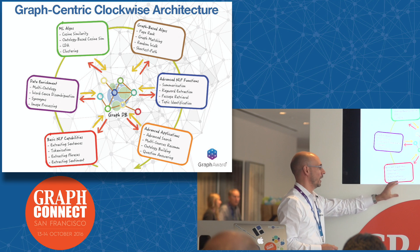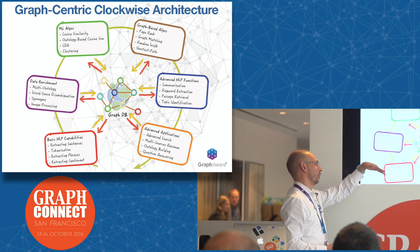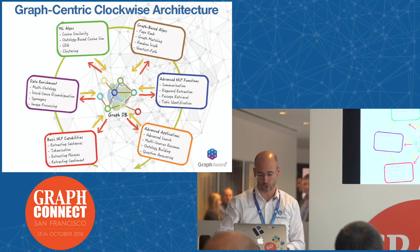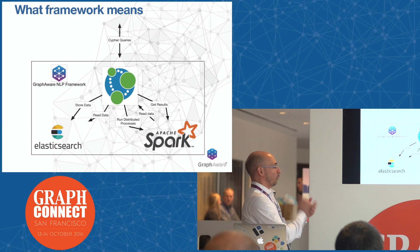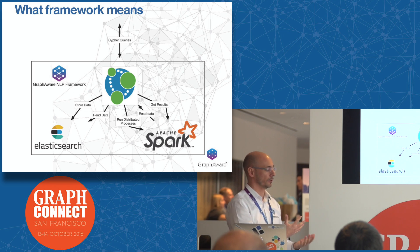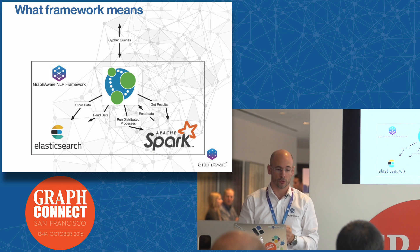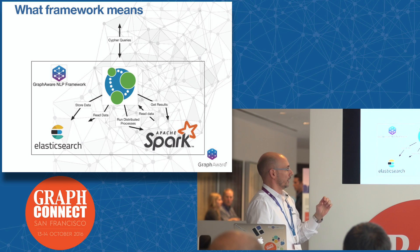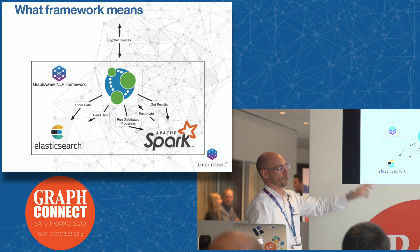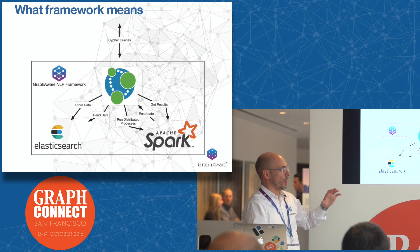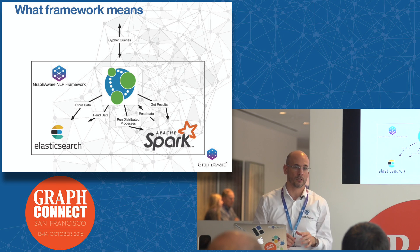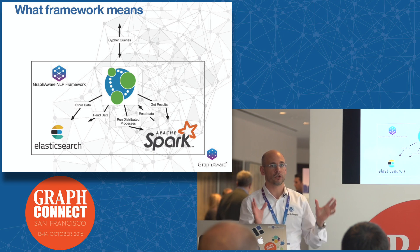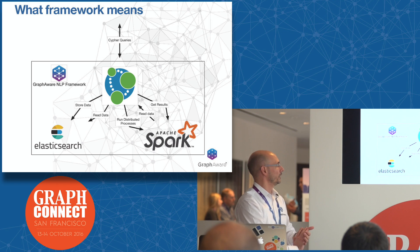We can extend the architecture with a lot of new features without having to take care of the previous existing modules. The clockwise means mainly that since NLP is a complex problem and you need to go through several steps if you would like to offer real advanced services, you need to think in the clockwise manner — starting from the first module and going through all or part of them. This is why we call it a framework: you can use complex stuff like Apache Spark or Elasticsearch simply by running Cypher queries through Neo4j, defining an entire end-to-end process just by running Cypher queries into Neo4j.